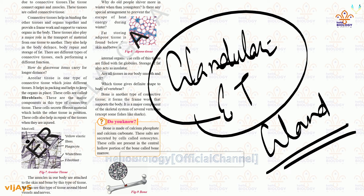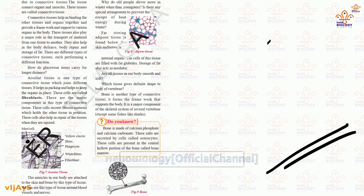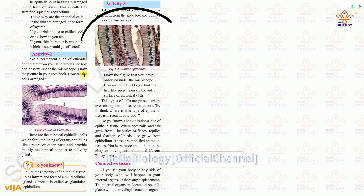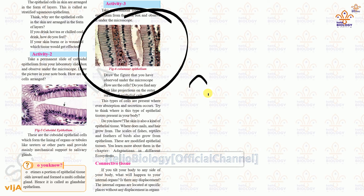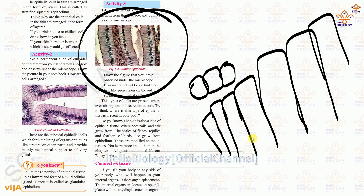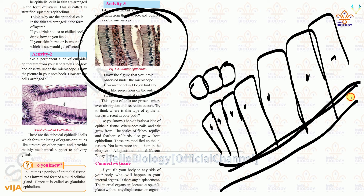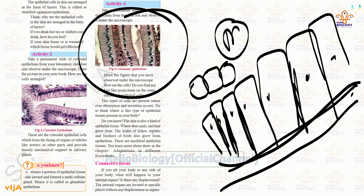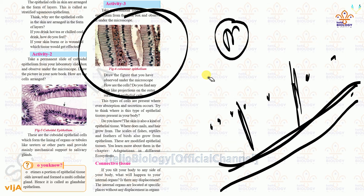Next is columnar epithelial tissue. Just now we saw cuboidal; now this is columnar — very big columns are arranged with a higher, bigger nucleus and one basement membrane. These are present internally. Under the microscope we can understand that they have no cellular gaps — they are compactly closed with no spaces.